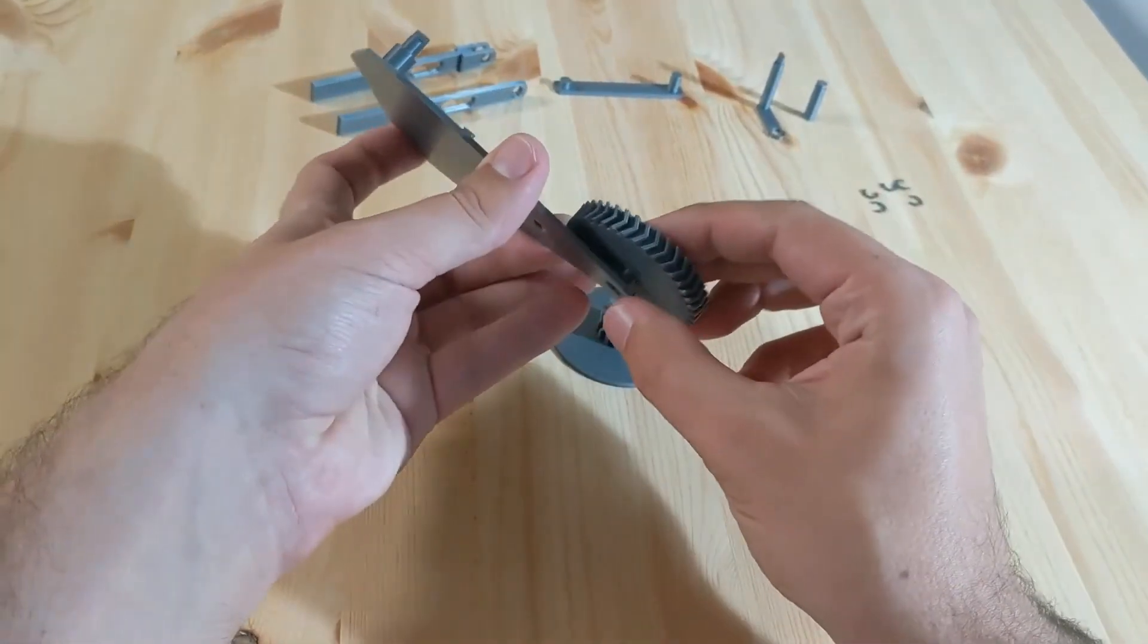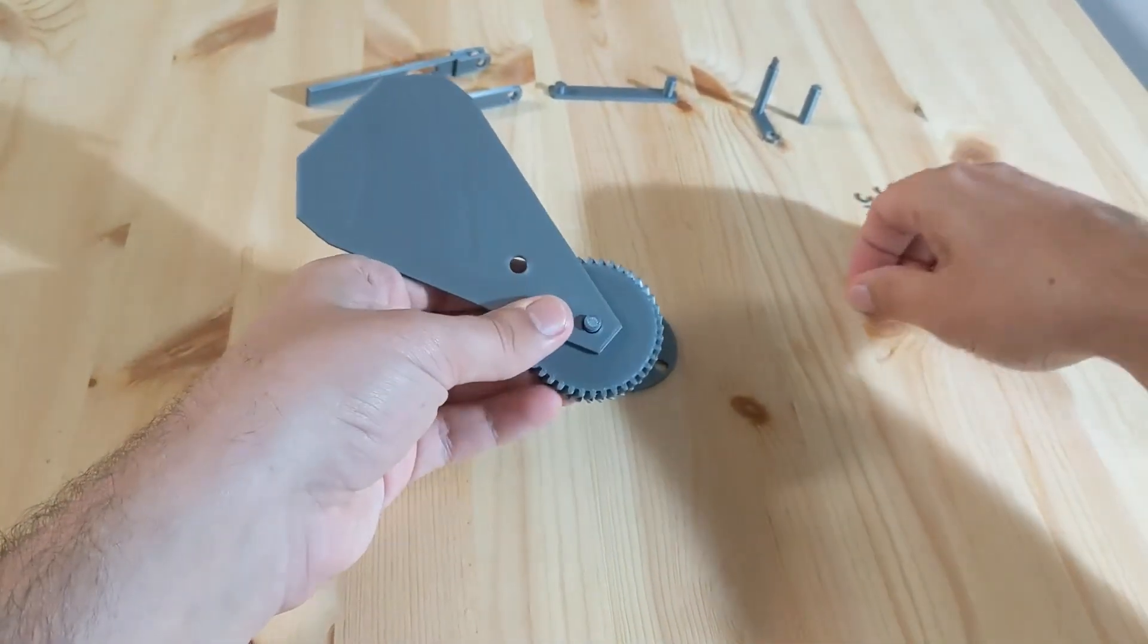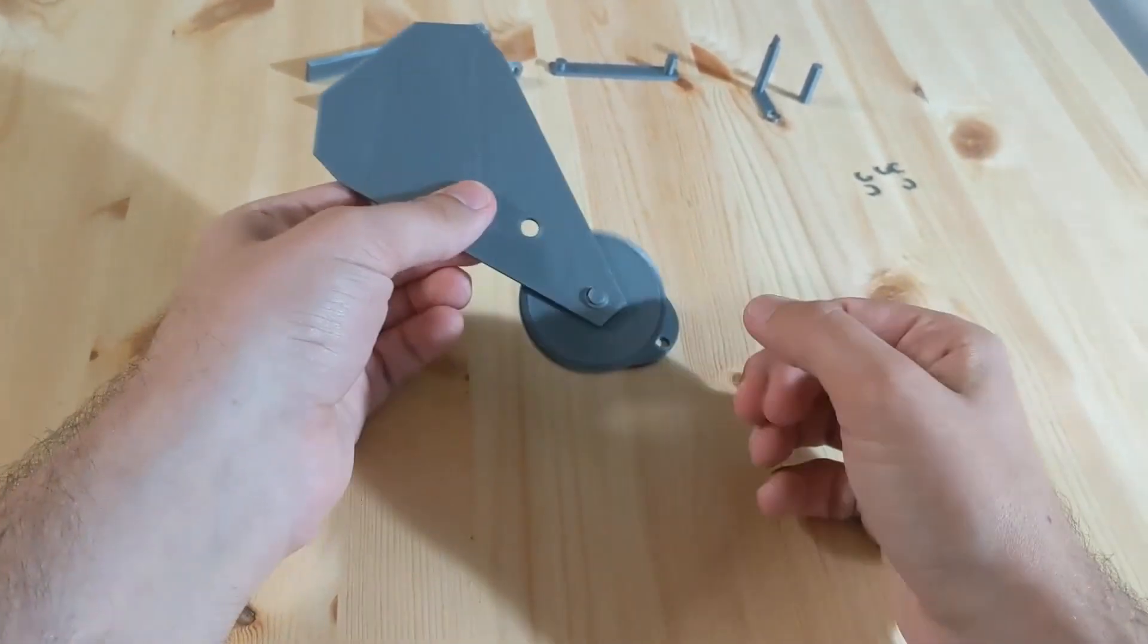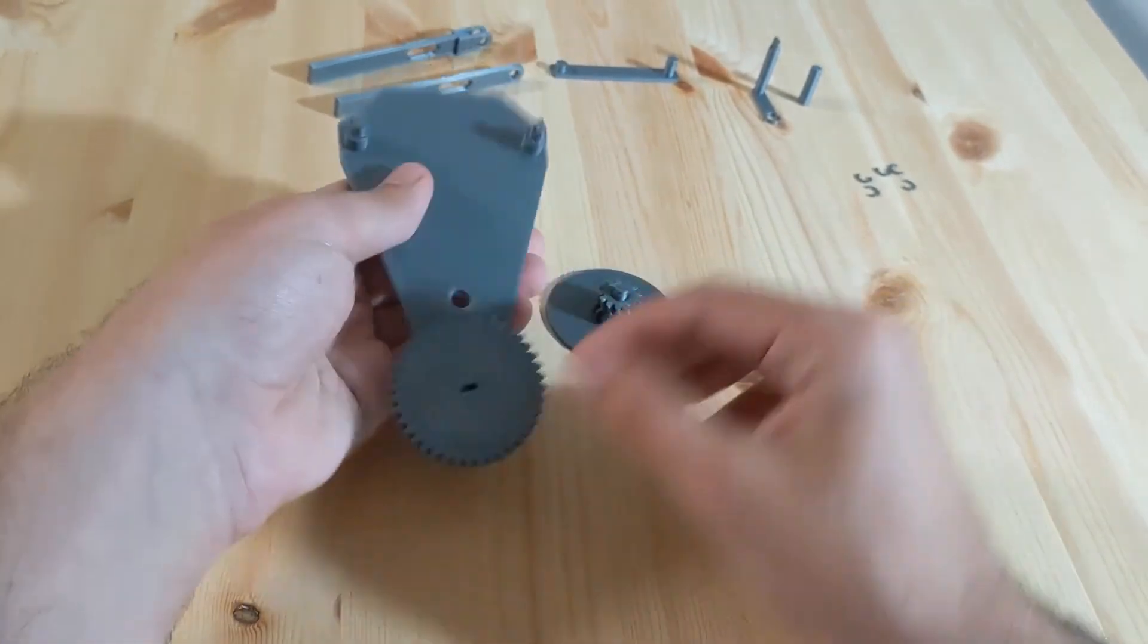So we'll take our backing plate, we'll slot the 40-tooth gear in, and we'll use one of our retaining rings to lock it in place on the backside. We snap it in there, and now we see that the gear can rotate, and it's pretty secure.